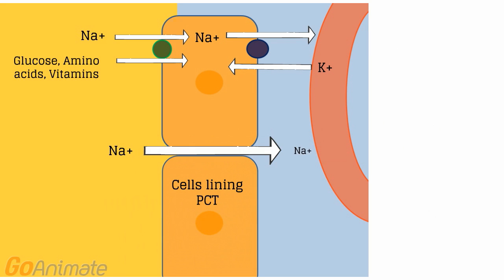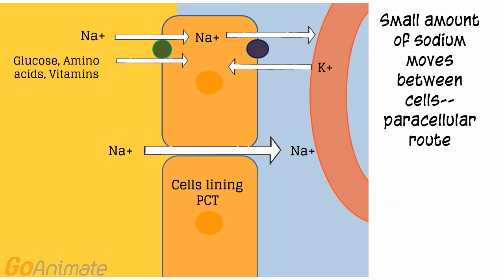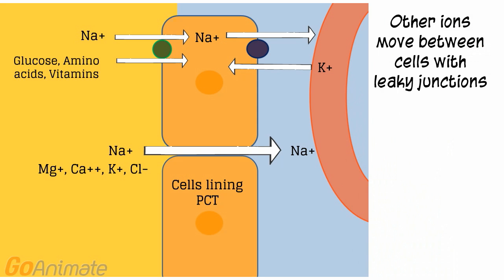A very small amount of sodium moves between the cells through leaky cell junctions. We call this paracellular movement. Other ions move between cells as well. These include magnesium, calcium, potassium, and chloride.